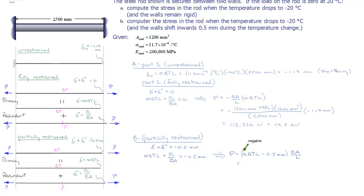We can substitute in and solve. Alpha delta T L we know to be 1.17 minus 0.5 millimeters,